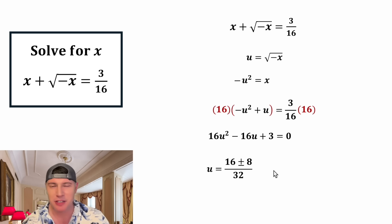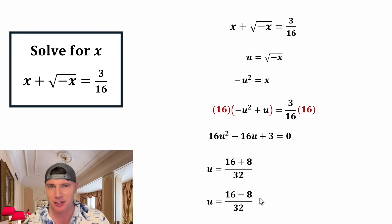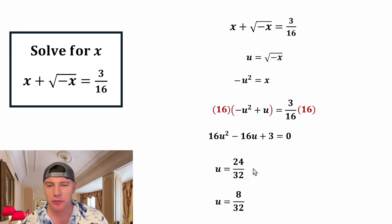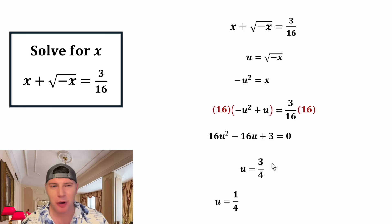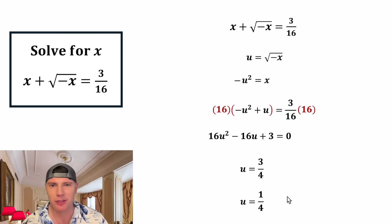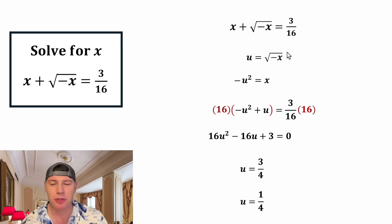So we have 16 plus or minus 8 over 32. With the plus or minus there are two possible answers. 16 plus 8 is 24, and 16 minus 8 is 8. 24 over 32 simplifies to 3 fourths, and 8 over 32 simplifies to 1 fourth. So we have two possible values for u: u equals 3 fourths, or u equals 1 fourth. But we're not trying to solve for u — we're trying to solve for x.